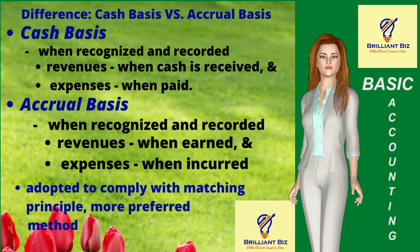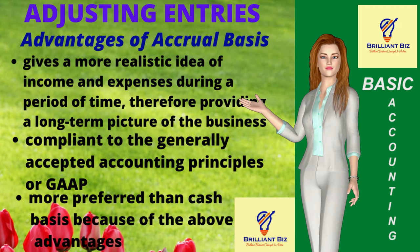There are two accounting methods of recording transactions: cash basis and accrual basis. The cash basis is a method where recording is done when cash is received for revenues and when paid for expenses. While under an accrual basis, recording of revenues and expenses is done when they are earned and incurred, respectively. It is also used to comply with the matching principle.